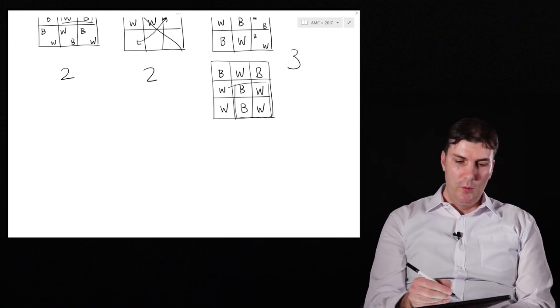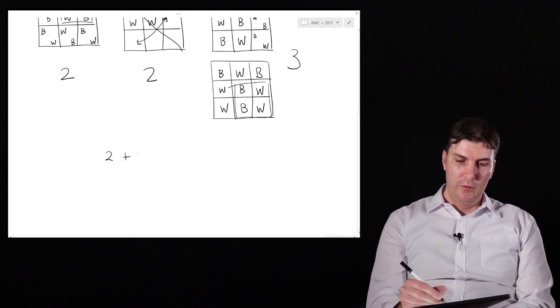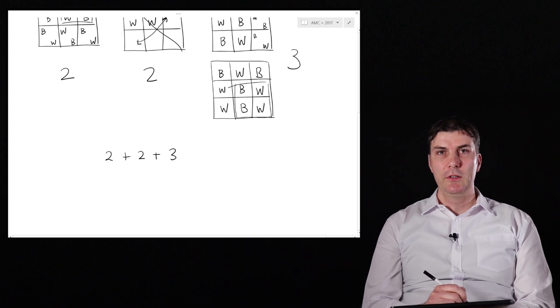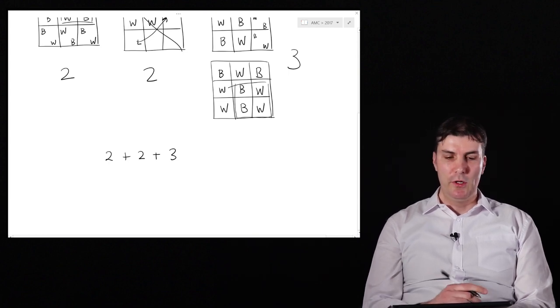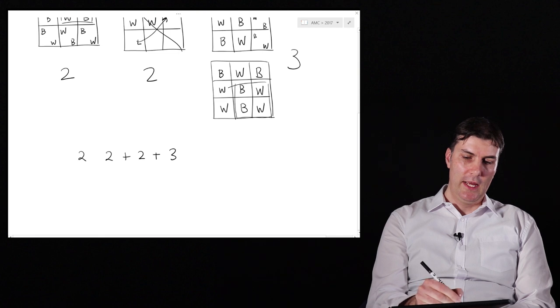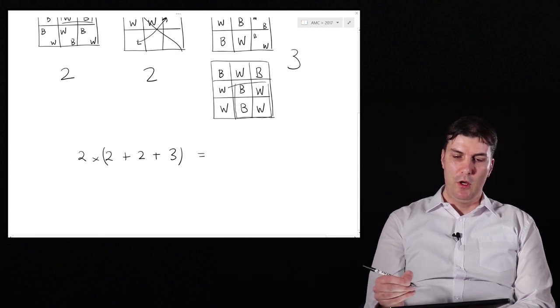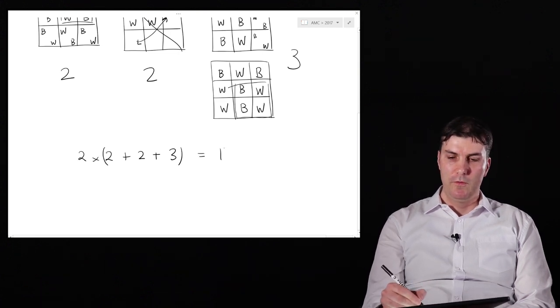So what's the total? Well, we've got 2 + 2 + 3, which of course is 7, but remember we assumed that there was only a black in the top left corner, so we need to double that answer and we get a total of 2 times 7, or 14.